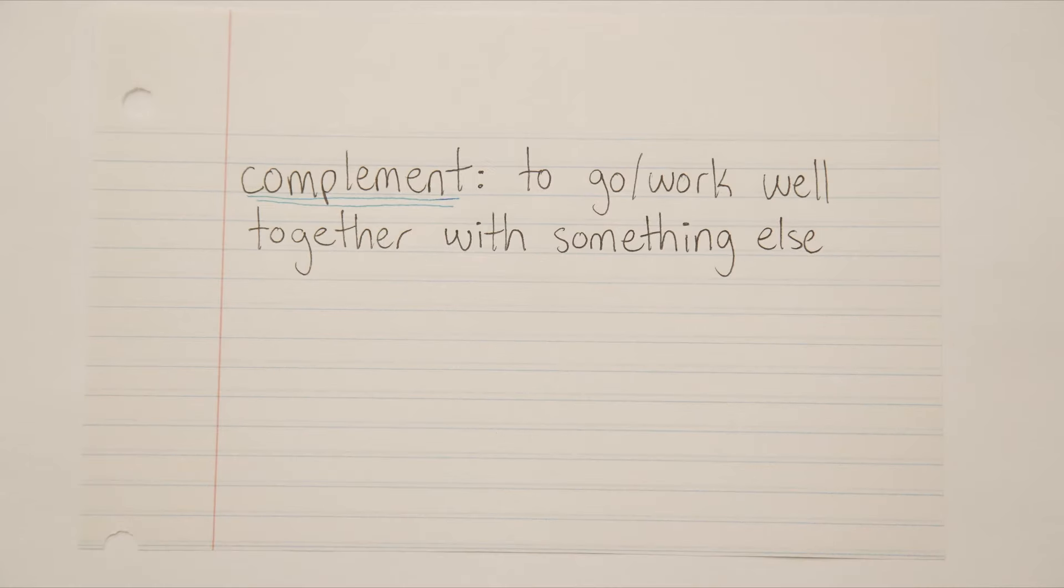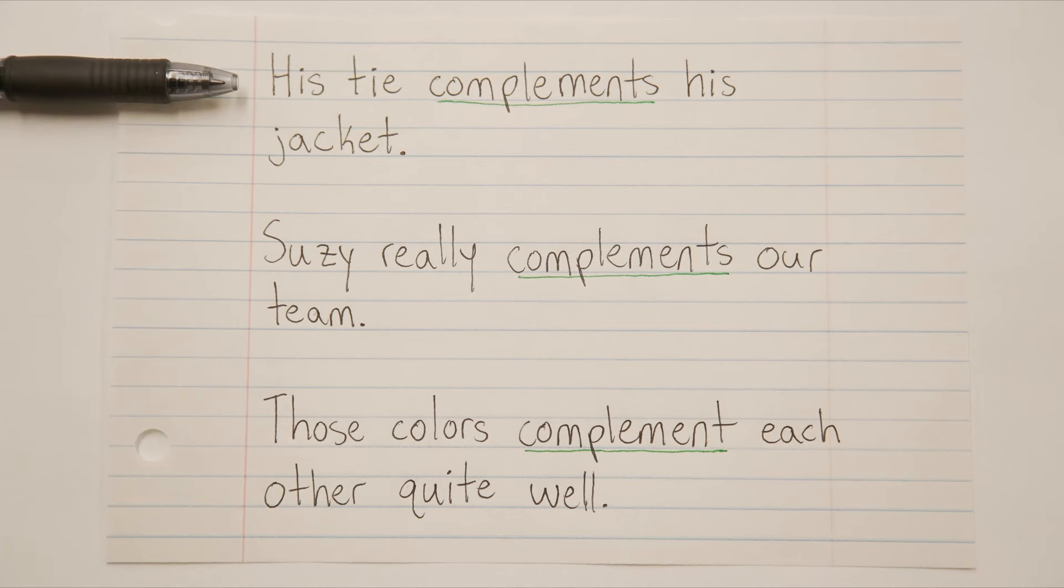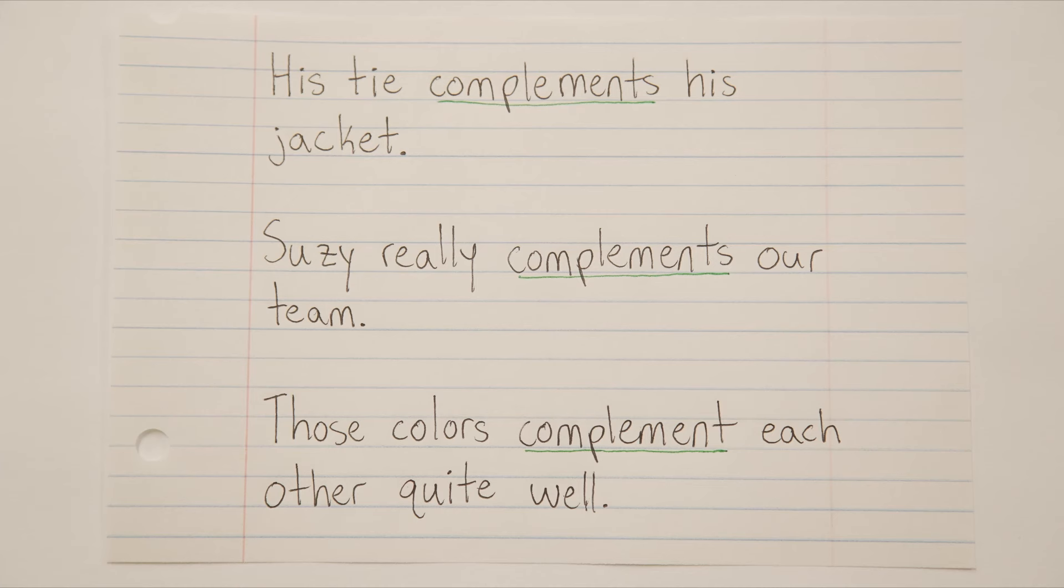Complement with an E means that multiple things work or go well together. This could be clothes, like his tie complements his jacket. Or it could be sports, like Susie really complements our team. Or maybe you're talking about art, like these colors complement each other quite well. Right? So in all of these sentences, things are working or going well together, whether it's for style or success or beauty or whatever.